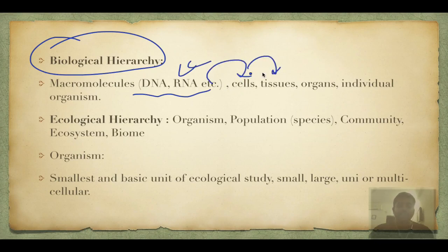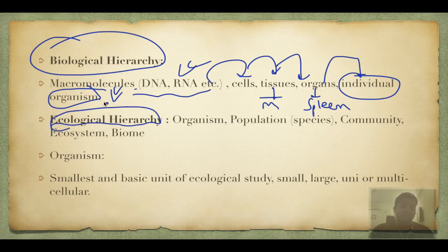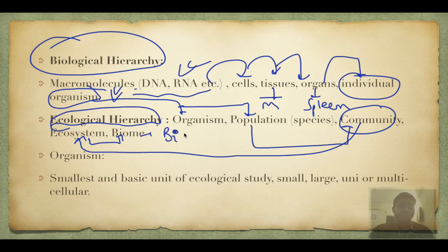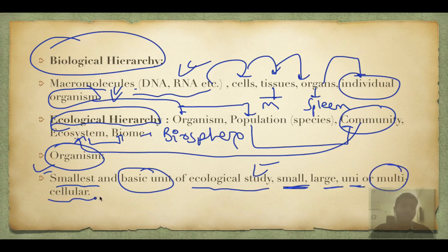The biological hierarchy starts from DNA and RNA, moves to cell, then tissues (group of cells), then organs (group of tissues) — for example muscle tissue, then organs like spleen, stomach, brain. Individual organism is where biological hierarchy ends and ecological hierarchy starts. Ecological hierarchy goes: organism → population (many organisms of single species) → community (many populations) → ecosystem (community plus environment) → biomes (huge ecosystems) → biosphere. The organism is the smallest basic unit of ecological study.